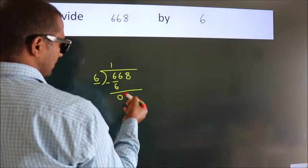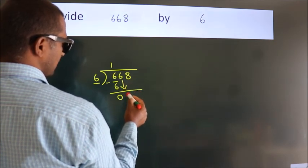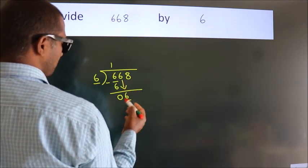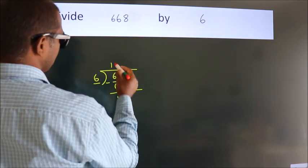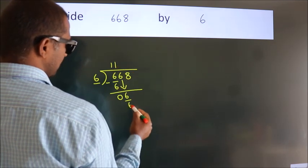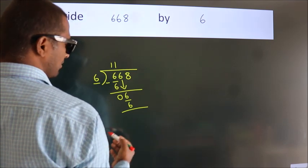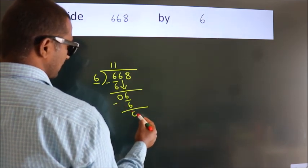After this, bring down the beside number. So 6 down. When do we get 6? In 6 table. 6 once, 6. Now we subtract. We get 0.